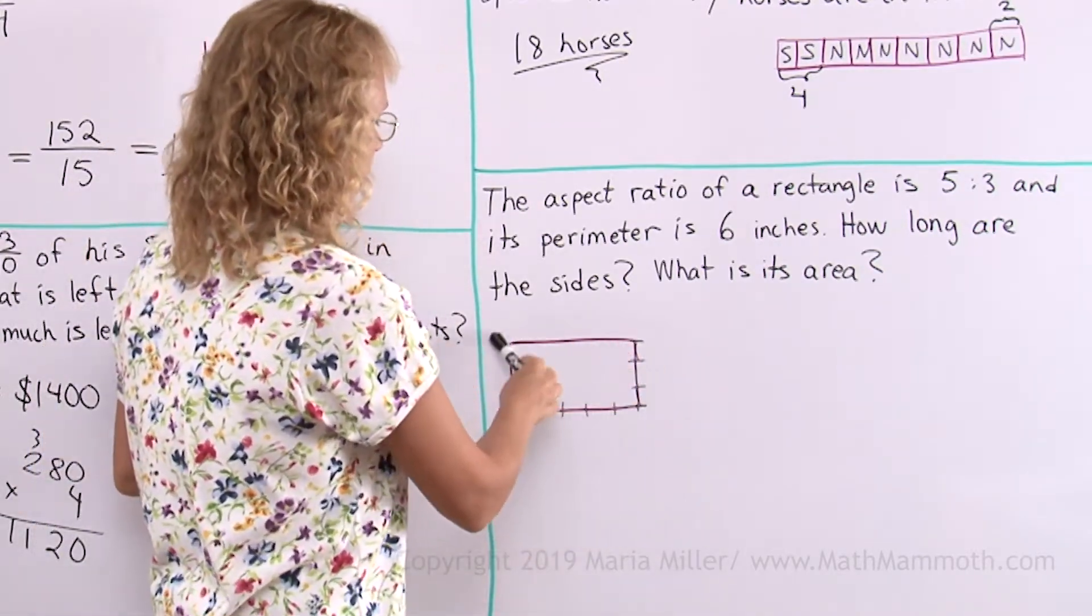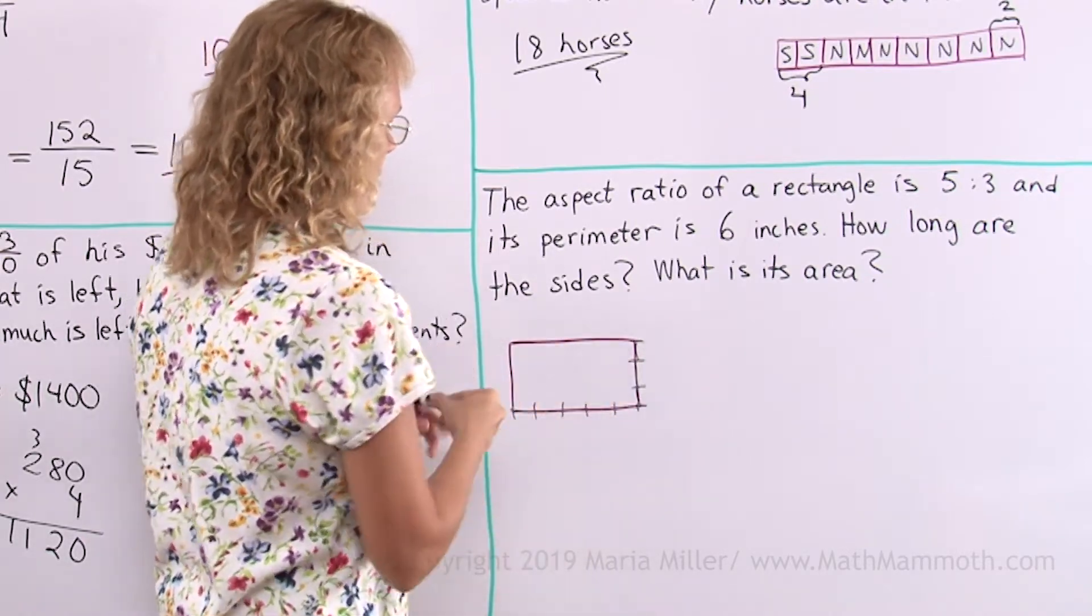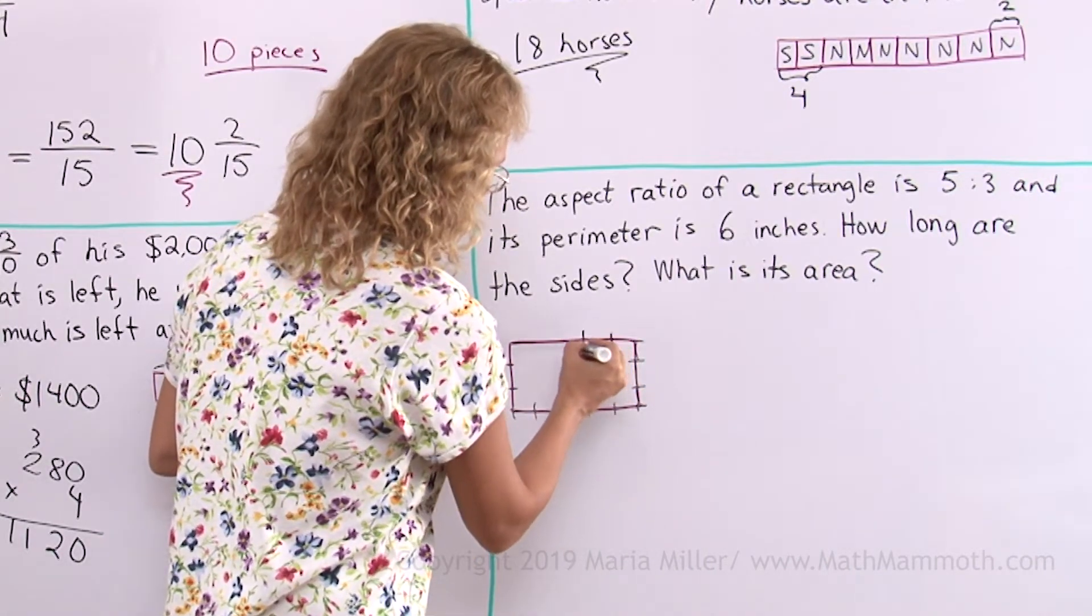Now, the perimeter all the way around is 6 inches. We know how much it is all the way around. Think of these little parts that I marked here. Think how many there are all the way around.